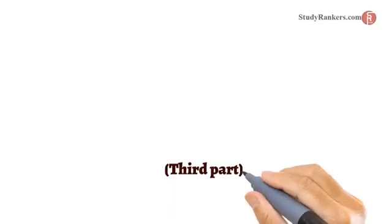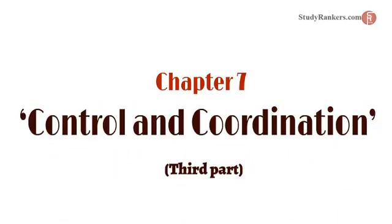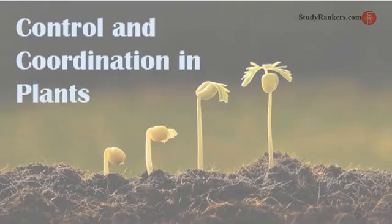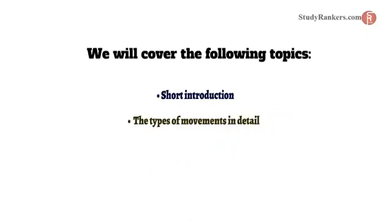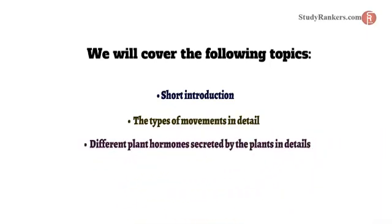In this video we are going to understand the third part of the 7th chapter, that is control and coordination. We are going to study about control and coordination in plants in detail. We will cover the following topics: first, a short introduction; then the types of movements in detail; the different plant hormones secreted by plants; and lastly, important terms. So let's start with our first topic.